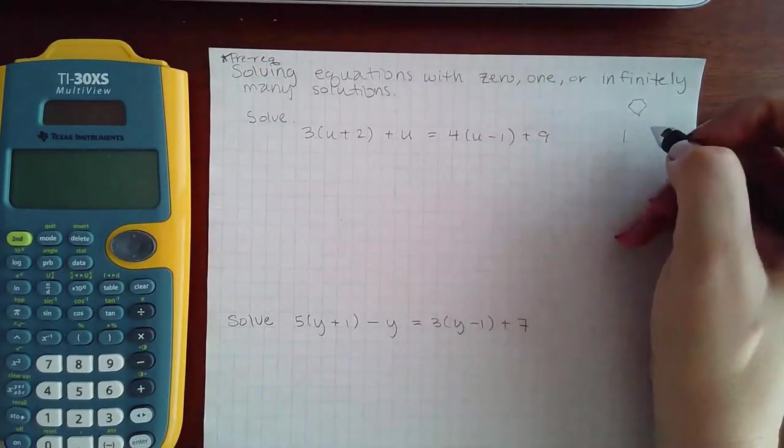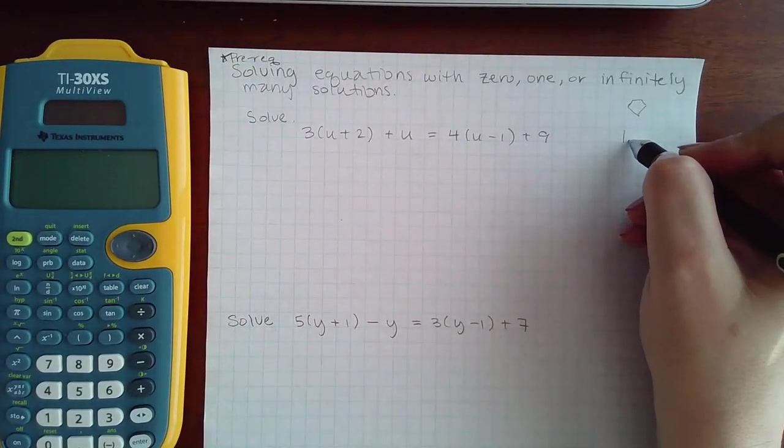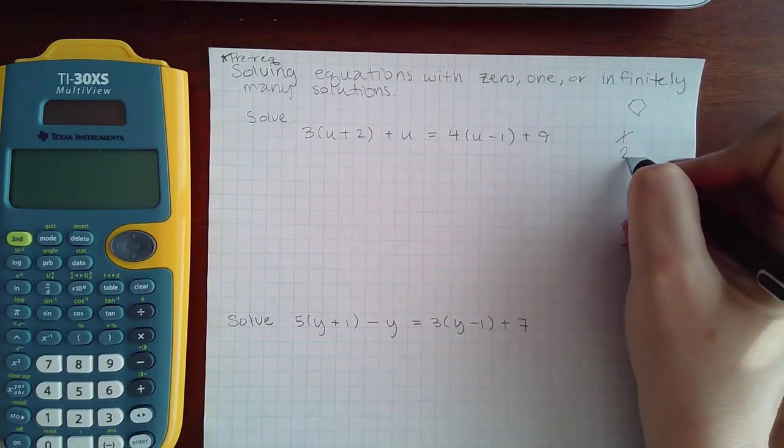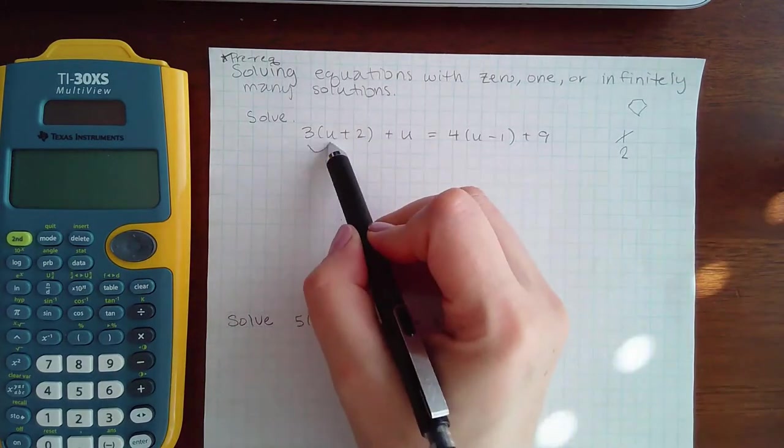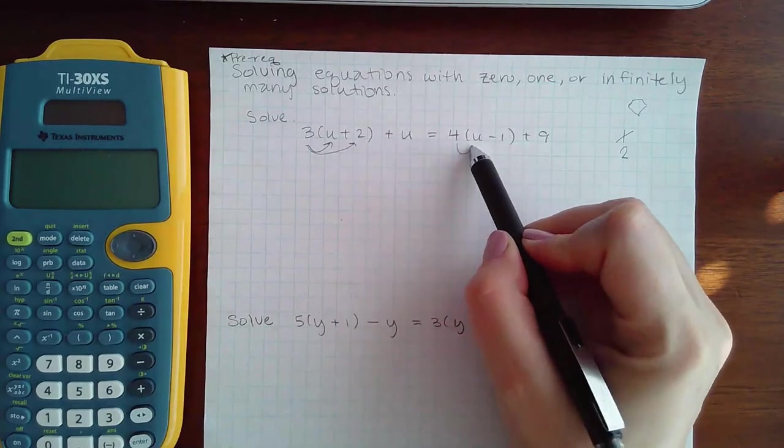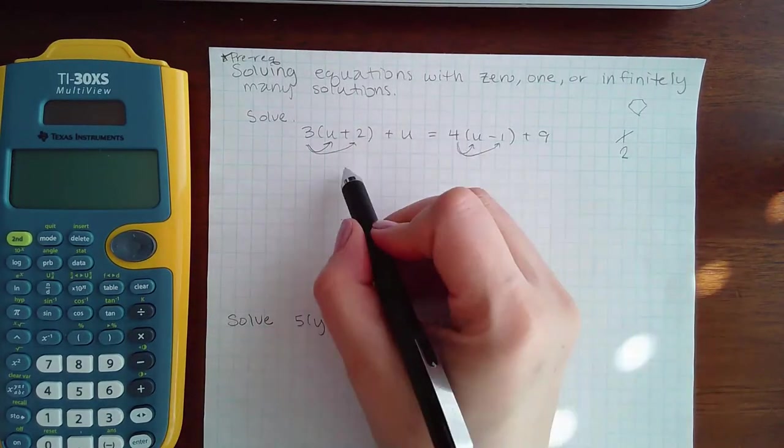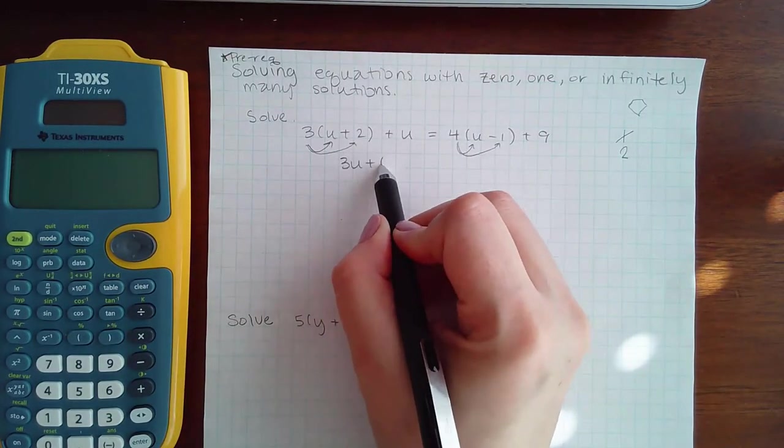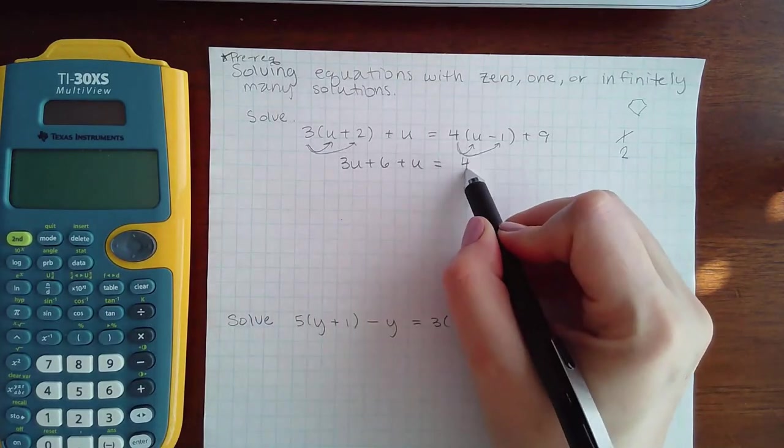For step one, you're going to eliminate fractions, which we have none here. Step two, you're going to eliminate parentheses, and we do have that in this case. So we get 3(u+2) + u = 4(u-1) + 9, which becomes 3u + 6 + u = 4u - 4 + 9.